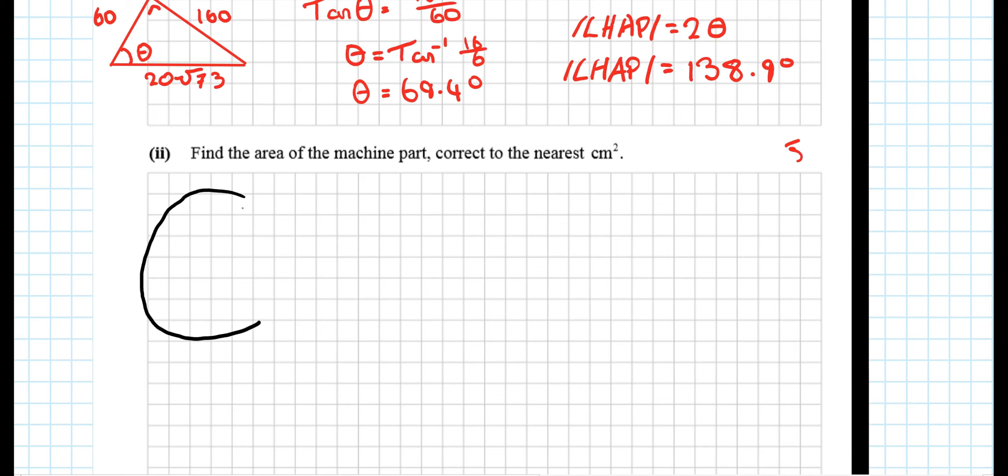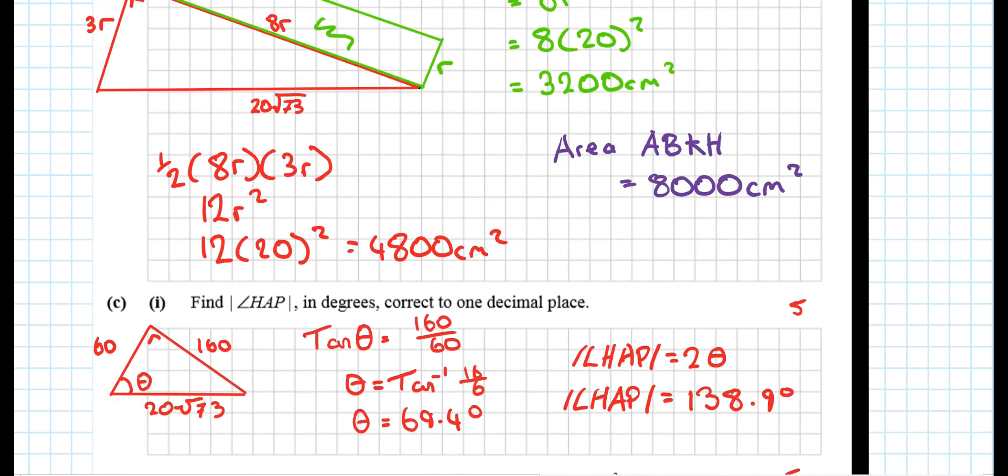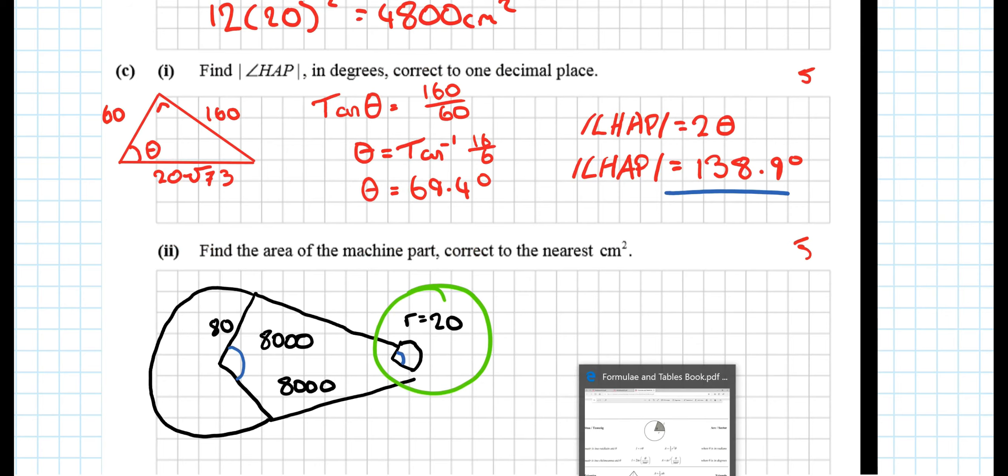Okay, and the last part of the question asks you to find the total area. So there's sort of three areas we need to consider. There's this area here. There's a little area here. And this area in the middle. Now, we actually know this area in the middle. It is twice this area here. So this was the 8,000. And we know this angle here is 138.9. So that means this angle here is 138.9. And we knew the radius is 20 here. And the radius here was 4r. So the radius here is going to be 80.